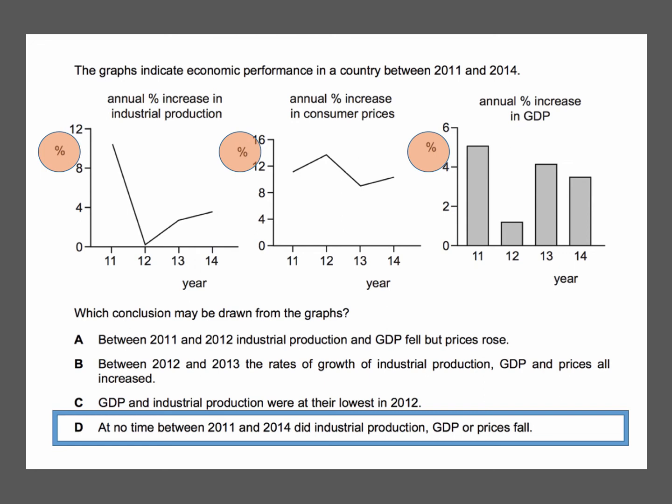Looking briefly at the other options: option A says between 2011 and 2012, industrial production and GDP fell but prices rose. Well, the growth of industrial production fell from about 9% down to close to zero — that's a slowdown in production. But it still remains positive, albeit only just. So industrial production was still increasing, just at a slow rate.